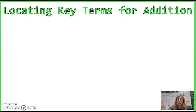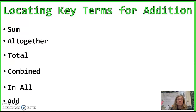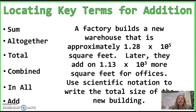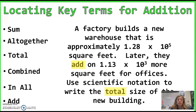Let's try some addition problems. We're going to locate the key terms for addition. Remember all of these words, and as you get into word problems on your own, use these notes so you don't forget what the words mean. Here's our problem: A factory builds a new warehouse that is approximately 1.28 times 10 to the 5th square feet. Later, they add on 1.3 times 10 to the 3rd more square feet for offices. Use scientific notation to write the total size of the building. Highlight the key words — add and total are the key words in this one, and we know both of those mean to add.